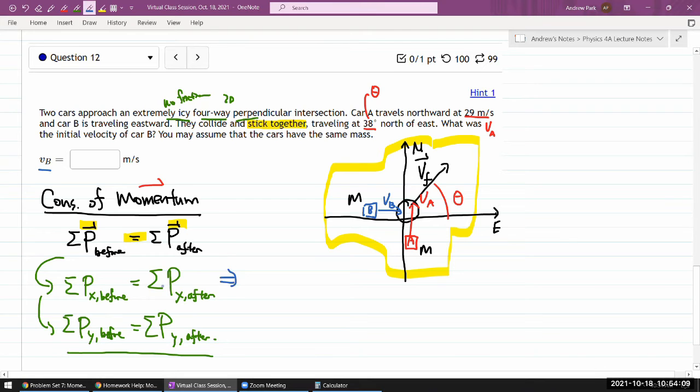Before the collision, car B was moving in the x direction and it was the only thing moving in the x direction. Car A was moving in the y direction. So I'll say x before will be mass of B, M, times its speed. That will give me the total x component of momentum.